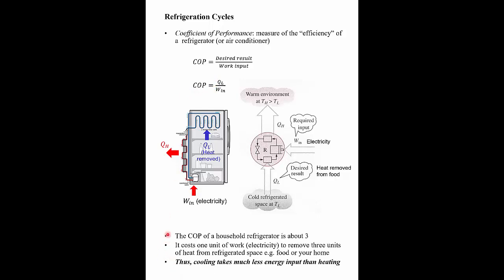The COP of a refrigerator is a number greater than one — it's about three. So for every kilowatt hour of electricity that you put in at the compressor, you extract about three kilowatt hours of heat from the food. And if it's an air conditioner for your home, the same applies — for every kilowatt hour of electricity you pay for, you extract about three kilowatt hours of heat from your home. So cooling takes less energy input than direct heating, because refrigeration cycles have a coefficient of performance typically around three.